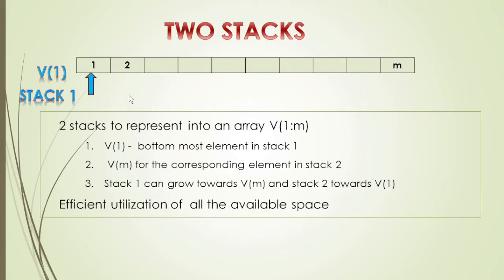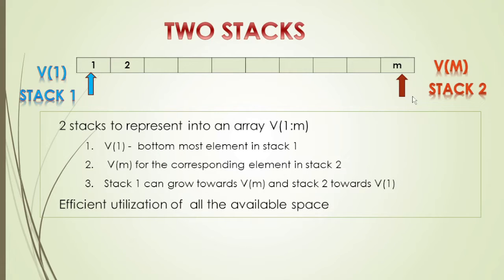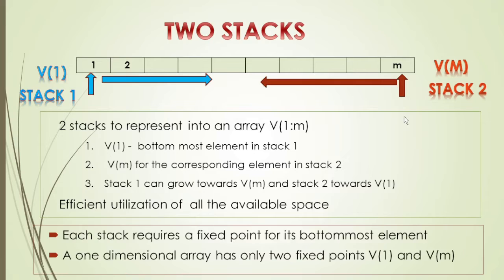How do we represent 2 stacks? The first stack starts at V[1], which is the bottom-most element of stack 1, and V[M] is the bottom-most element of stack 2. Stack 1 grows towards V[M] and stack 2 grows towards V[1]. This way we utilize memory efficiently. Each stack requires a fixed point for its bottom-most element — so we have 2 fixed bottom points.